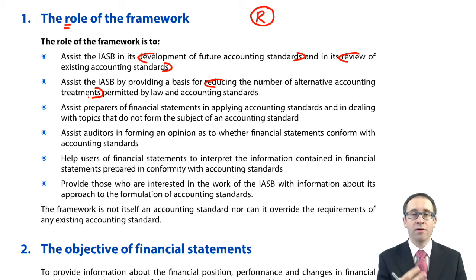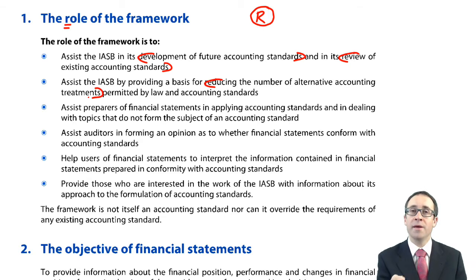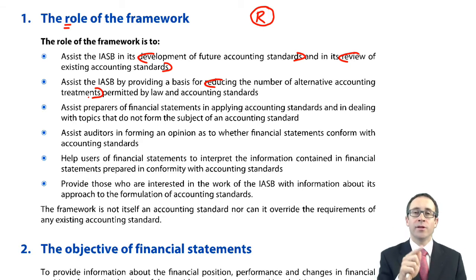If you incur interest on a loan and use that loan to finance the construction of a non-current asset — so PPE — the interest now has to be capitalised as part of the cost of PPE. Previously, you had the choice.